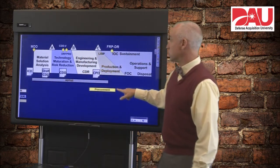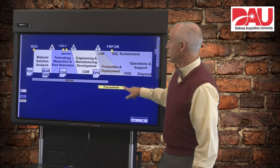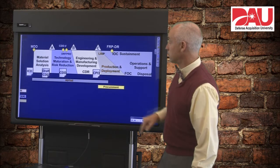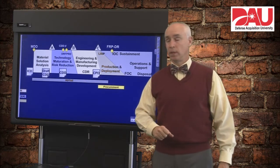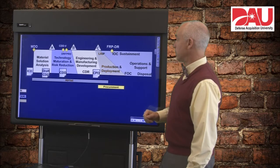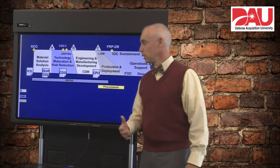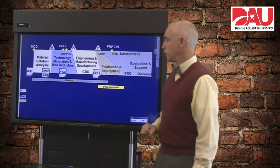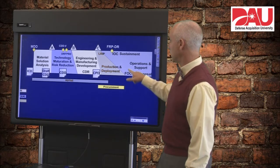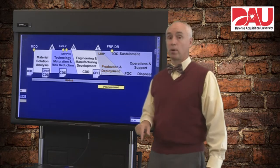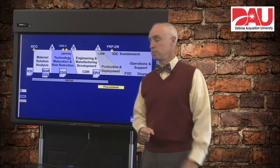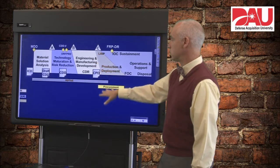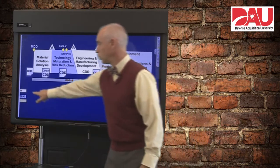Procurement is going to start right here usually at Milestone C, unless we've got an exception and have some money to spend in engineering and manufacturing development for long lead items. But generally speaking, it's going to start at Milestone C and continue all the way through production and deployment until we have bought all of our systems. So procurement tends to be mostly here in production and deployment.